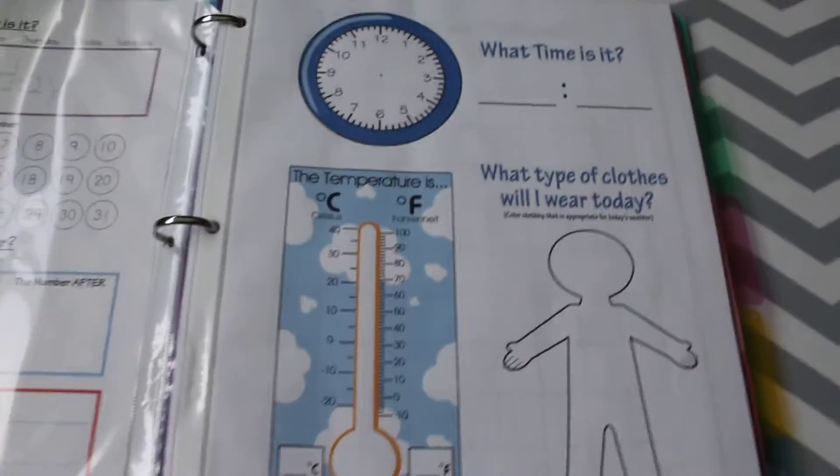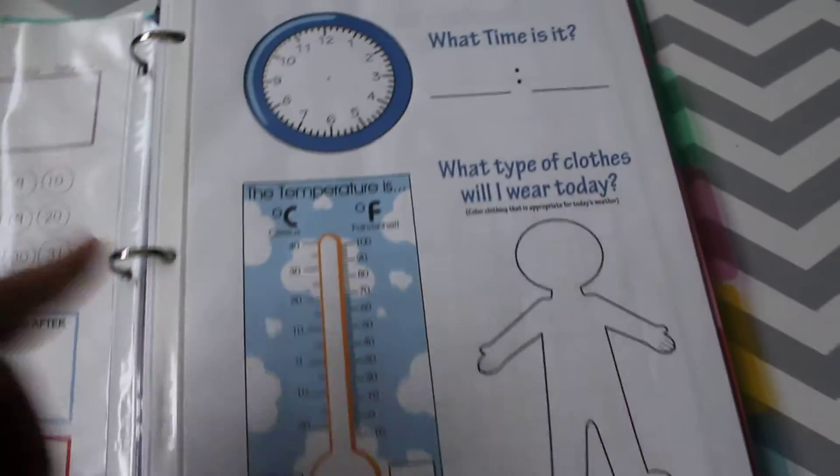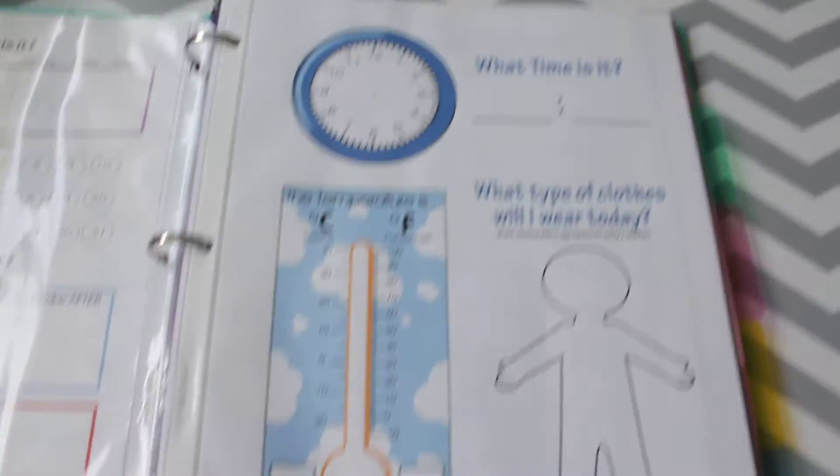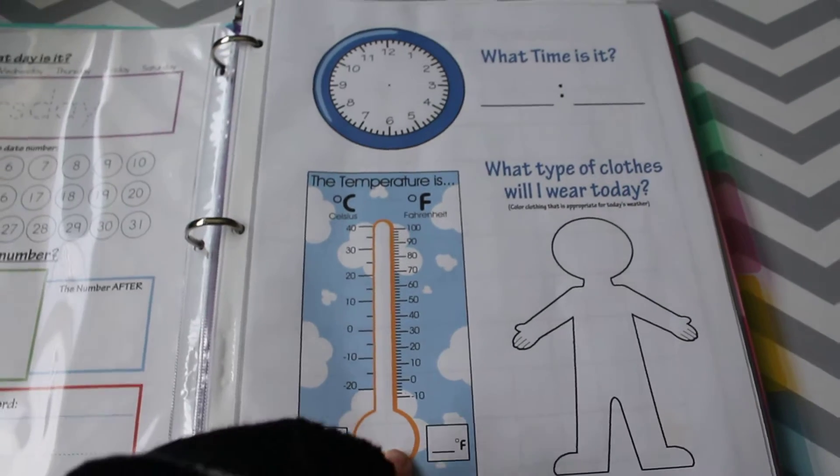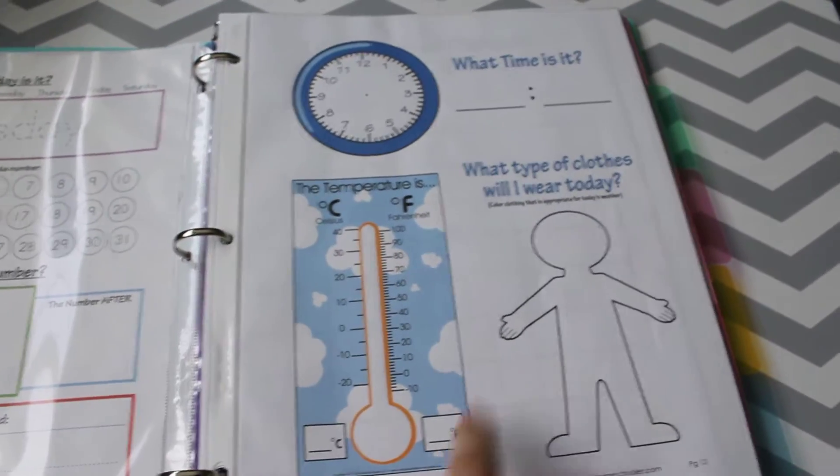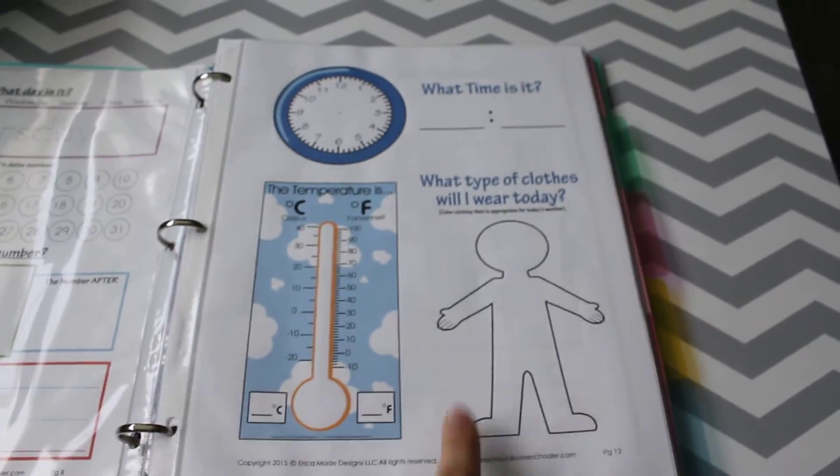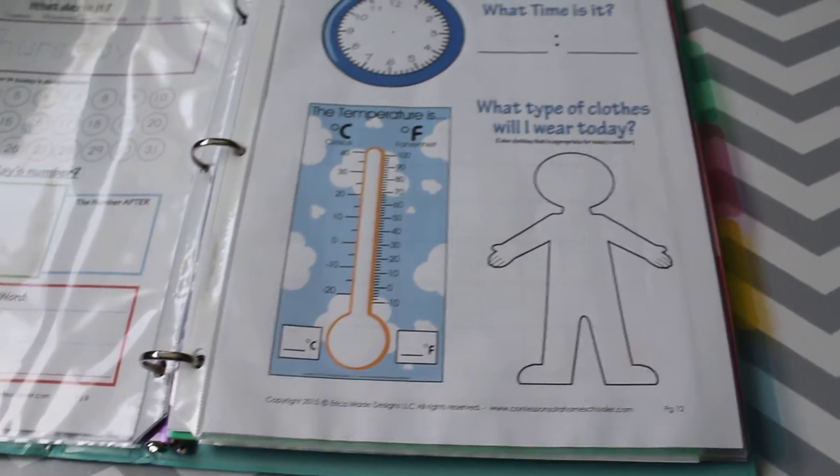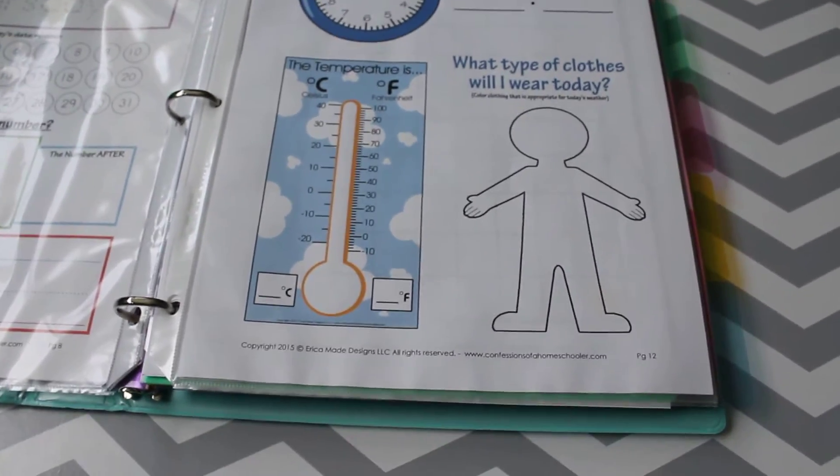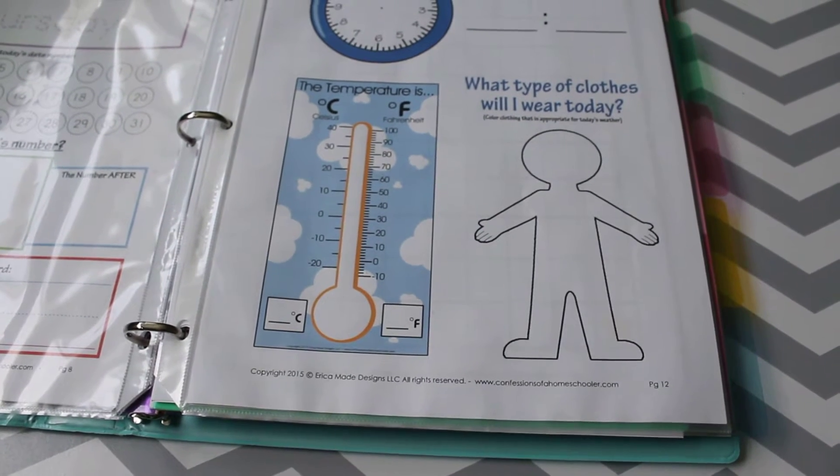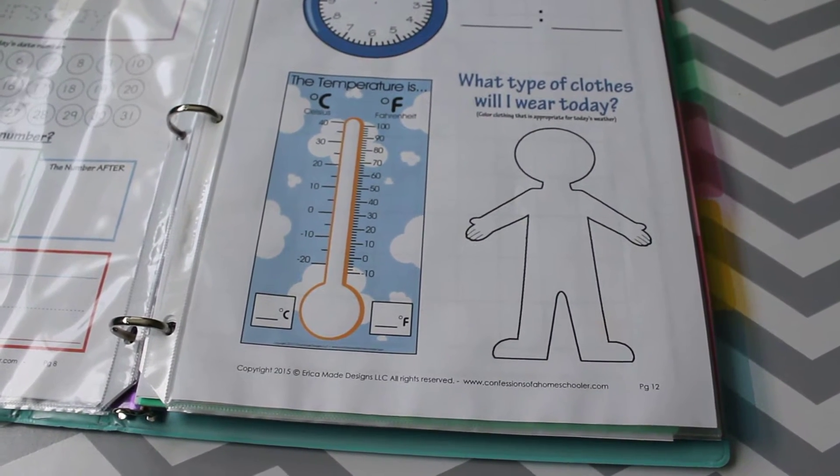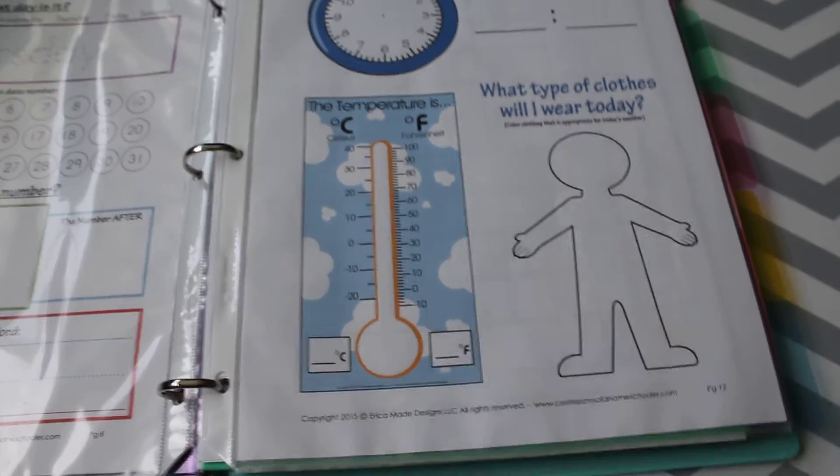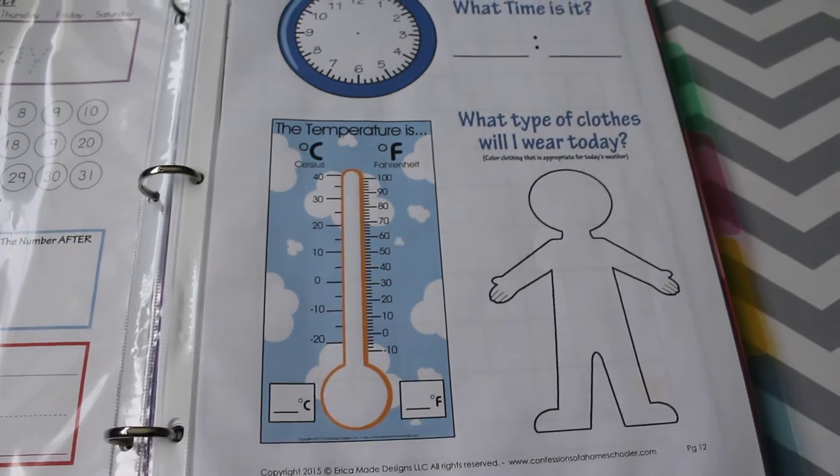The next one is time and weather. They'll just trace it, copy the numbers. For weather we'll probably just do Fahrenheit, we'll look it up on my phone and write the number. It'll be handy to have them doing what type of clothes they'll wear because we live in the Midwest and in the fall and spring it can be shorts and tank top one day and then the next day it's snowing, so it can be confusing to know what to wear with the weather.